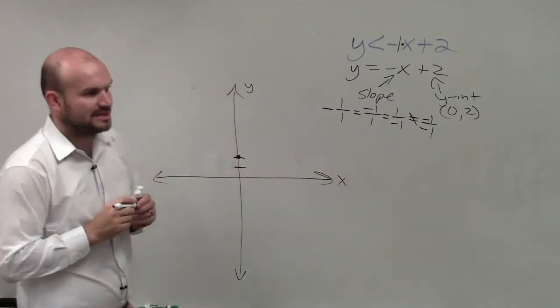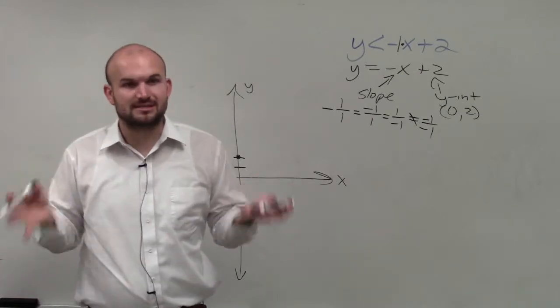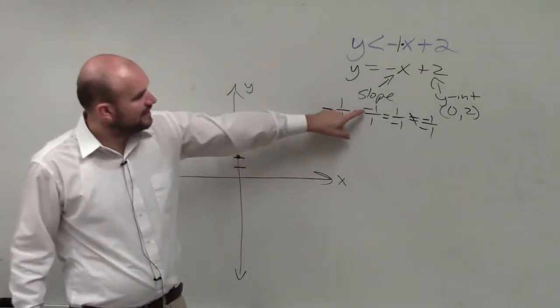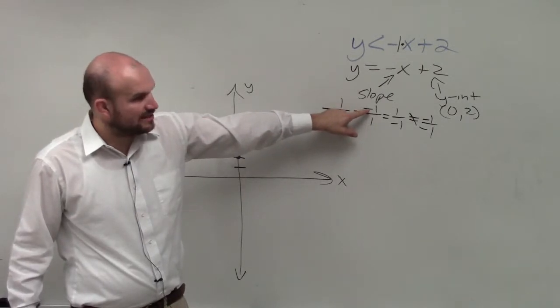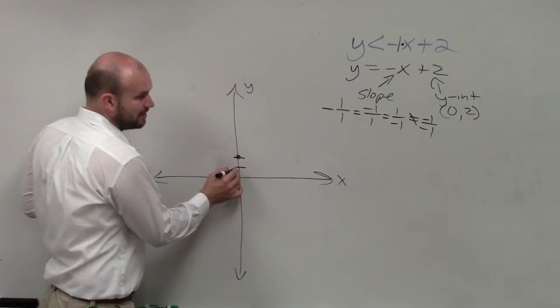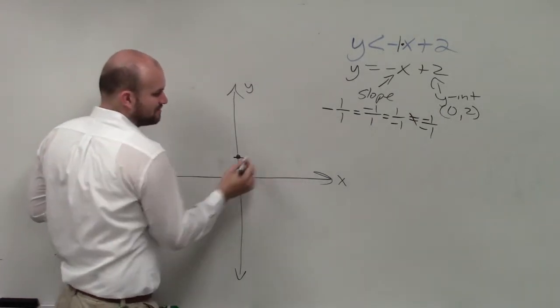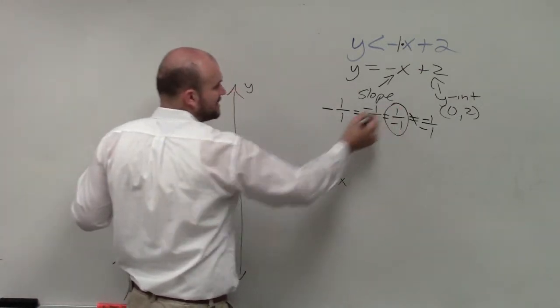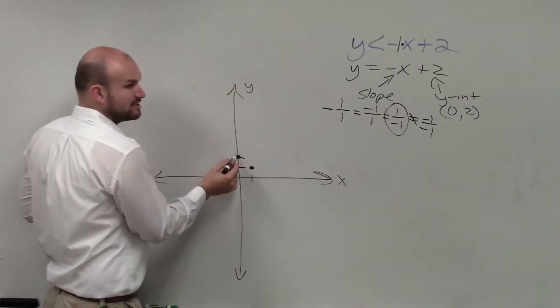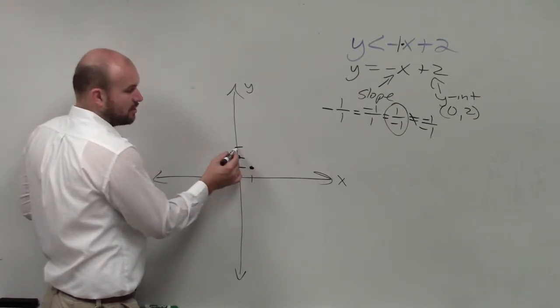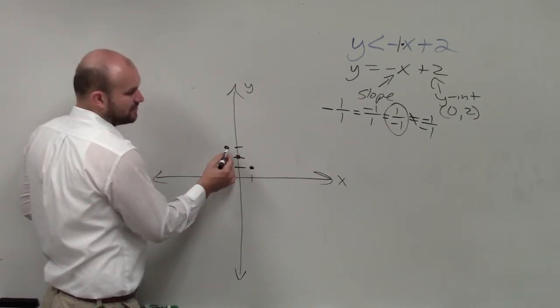Now the next thing is I'm going to use my slope to find my next coordinate point. So if the change in the y-coordinates is negative 1, that's going to tell me from my y-intercept I'm going to go down 1. If the change in the x-coordinates is positive 1, that's going to tell me to go to the right one. Or if I use this ratio, if the change in the y-coordinates is positive 1, I go up 1. And if the change in the x-coordinates is negative 1, I go left 1.